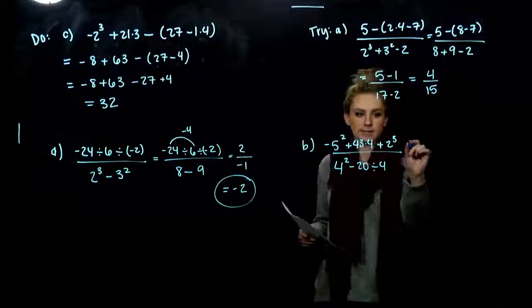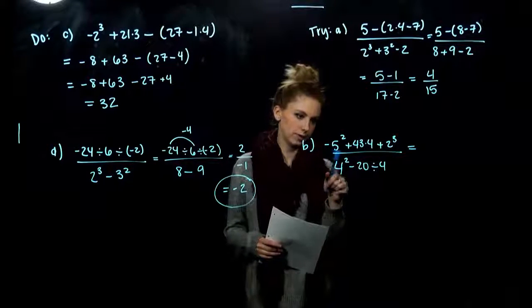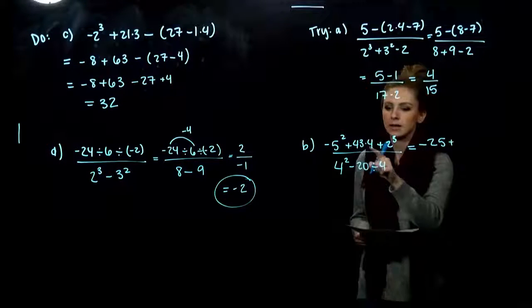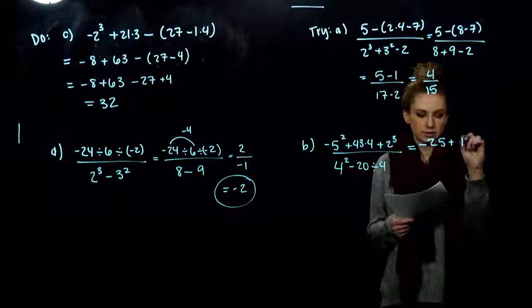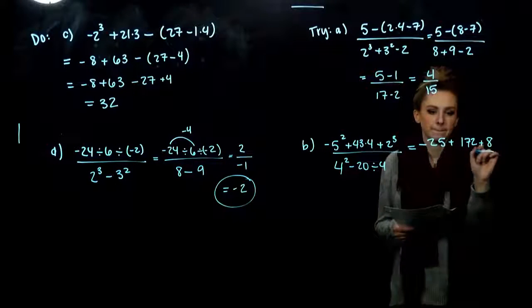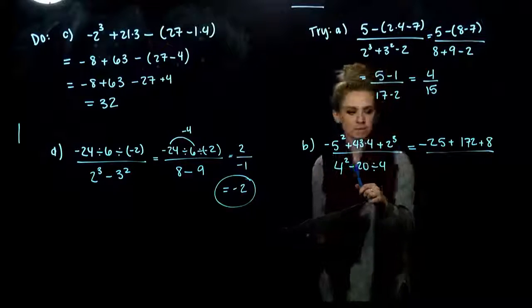Last one. So negative of 5 squared is going to give us minus 25. I can compute the multiplication together. 43 times 4 is 172. And again, 2 cubed is what? 8. So now we can just go left or right down there. Up there, excuse me. Now what about down here?